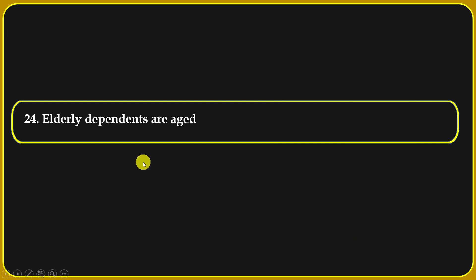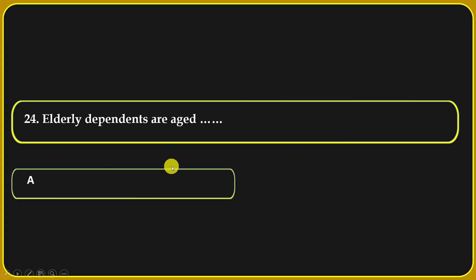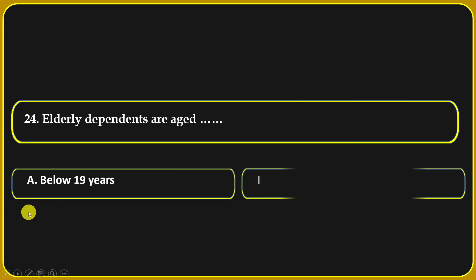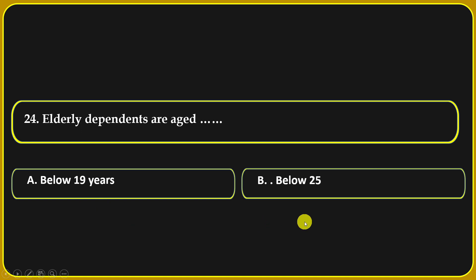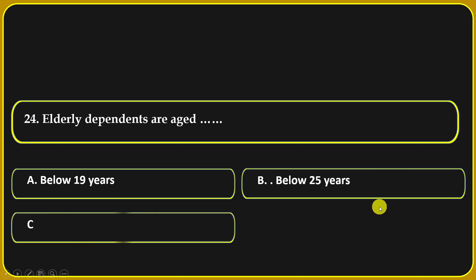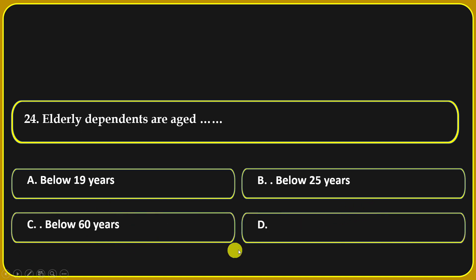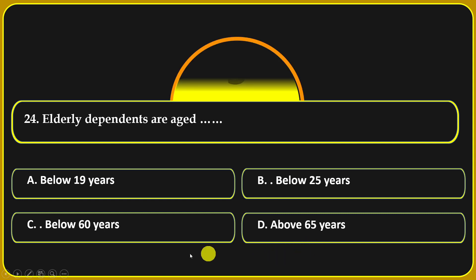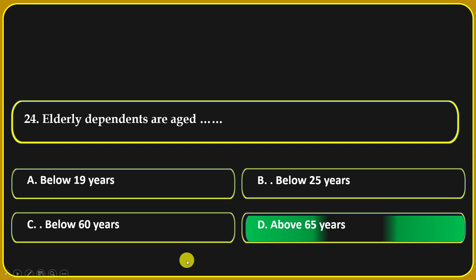Elderly dependents are aged: below 19 years, below 25 years, below 60 years, or above 65 years. Above 65 is the correct answer.